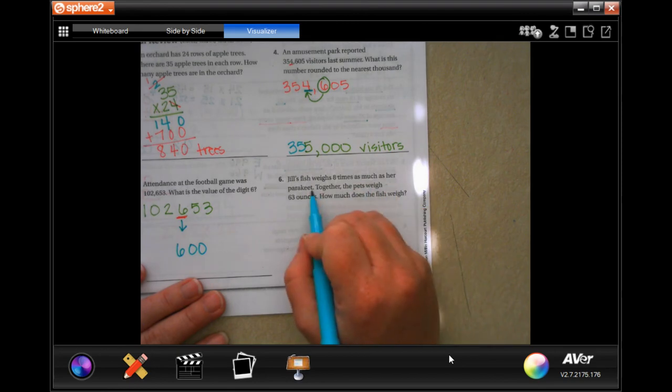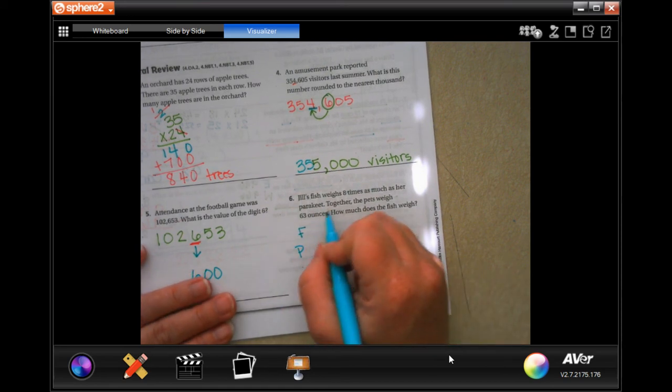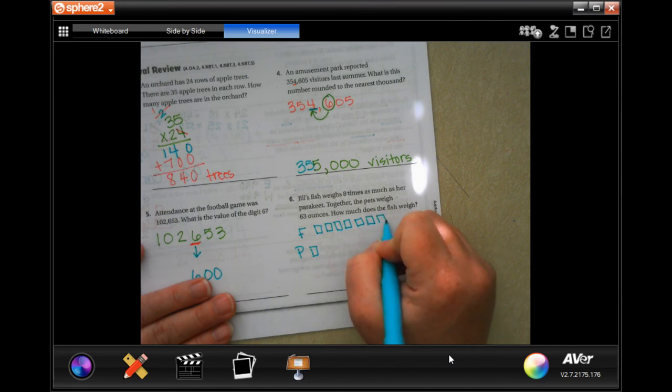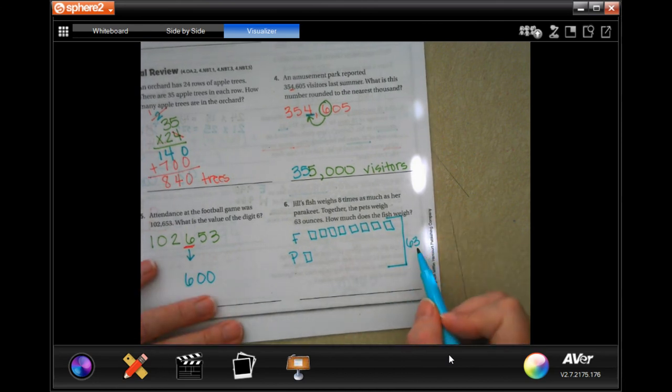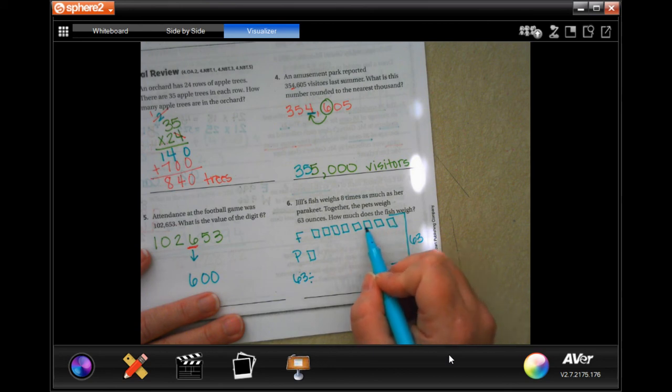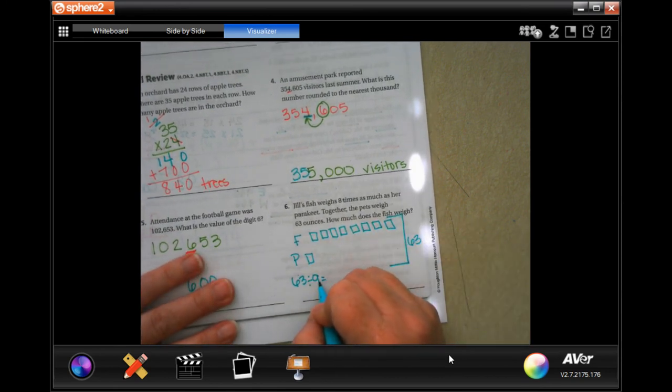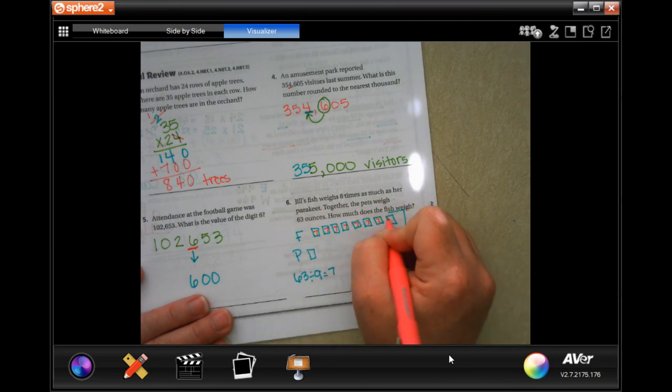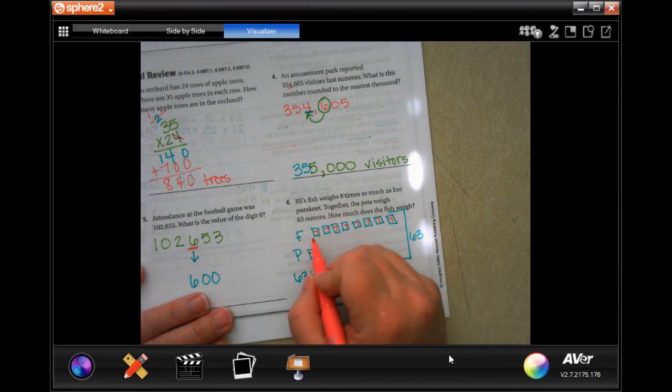Jill's fish weighs 8 times as much as her parakeet. Together, the pets weigh 63 ounces. So, Jill's fish and her parakeet. Her fish weighs 8 times. So, her parakeet's 1, her fish is 8. And all together, they weigh 63 ounces. So, that means that you have to take that 63 ounces and divide it by however many boxes you have. So, 1, 2, 3, 4, 5, 6, 7, 8, 9. And I know that 9 times 7 is 63. That means that all of these boxes are worth 7. So, her parakeet weighs 7 ounces.